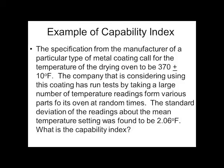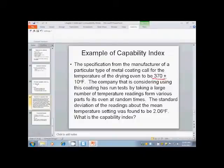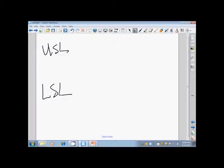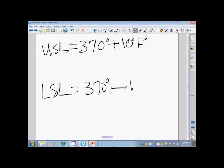Looking at this, we have 370 degrees plus or minus 10. That right there is the numbers we need to use. Our upper specification limit is going to be 370 degrees plus 10 degrees Fahrenheit, our lower specification limit is going to be 370 degrees minus 10 degrees Fahrenheit. So we are looking at here, the plus or the minus.